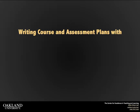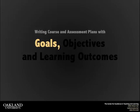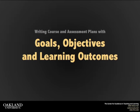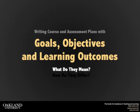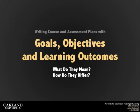Every syllabus should have three main components: goals, objectives, and learning outcomes. We may even use these words in our assignments and activities. These three terms often accompany one another, but what do they mean and how do they differ?